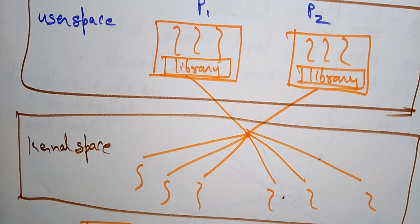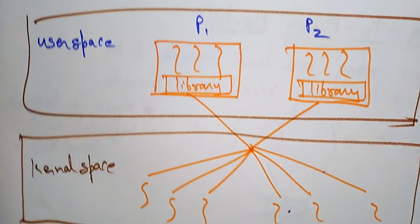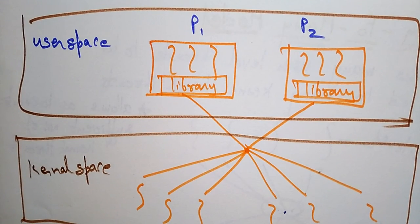So this is about the different types of multi-threading models: one-to-one, many-to-one, and many-to-many models. Thank you.